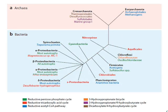In summary, this schematic phylogenetic tree depicts the distribution of the six carbon fixation pathways among major phylogenetic lineages in both archaea and bacteria. Thank you for listening.